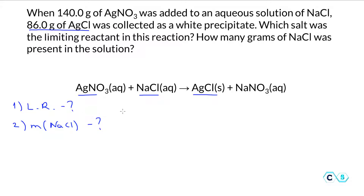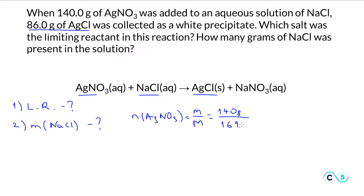In order to answer both of them, we need to first find the moles. Let's find the moles of silver nitrate. The moles of silver nitrate are equal to the mass of the silver nitrate divided by the molar mass of the silver nitrate. So this is equal to 140 grams divided by 169.9 grams per mole, which gives us 0.824 moles of silver nitrate.